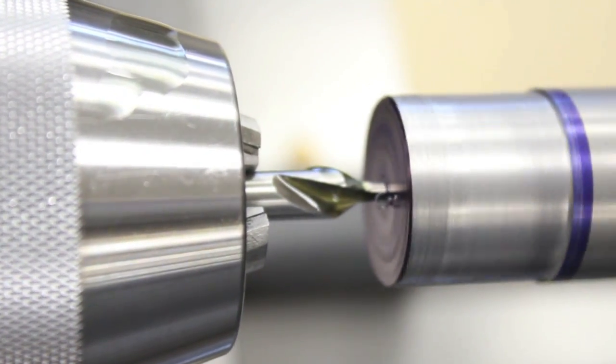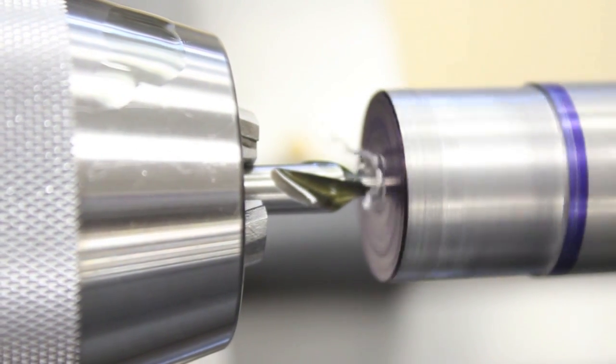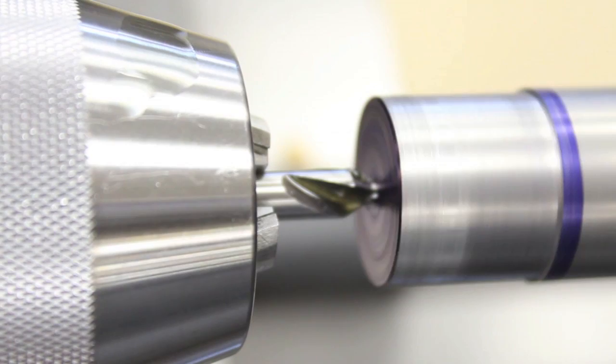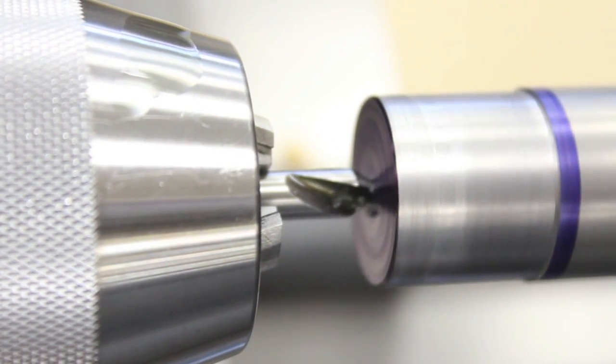Cutting oil is specially formulated with cutting agents to improve chip removal, extend the life of the cutting tool, and keep the workpiece cool to prevent thermal expansion.